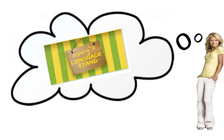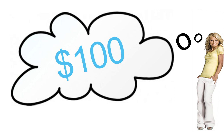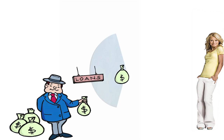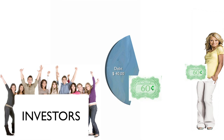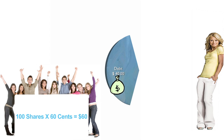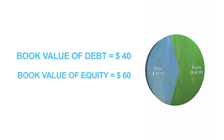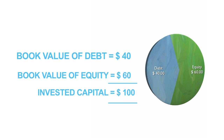Let's take the example of Amy's lemonade stand to understand some key concepts and ratios. To set up her company, Amy needs $100. She finds this in two ways: she raises capital by borrowing $40, and she issues equity worth $60 at $0.60 per share. We refer to these numbers as the book value of debt and the book value of equity. Together, these numbers constitute the invested capital — in Amy's case, $100.